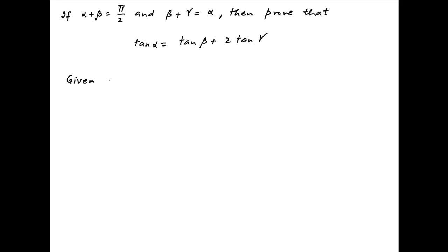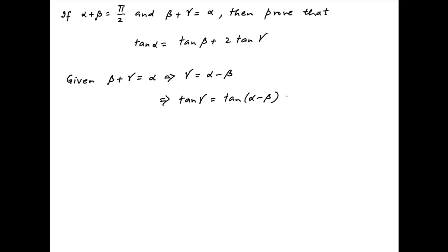We are given that β + γ = α, therefore γ = α - β. Taking the tangent of both sides, we get tan γ = tan(α - β), which equals tan α minus tan β divided by 1 plus tan α·tan β. Let's call this Result 1.